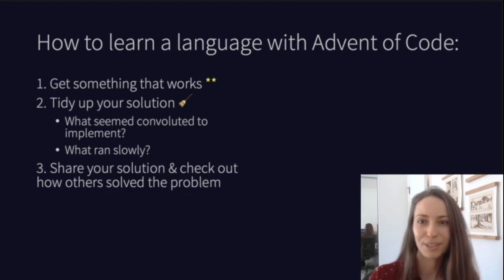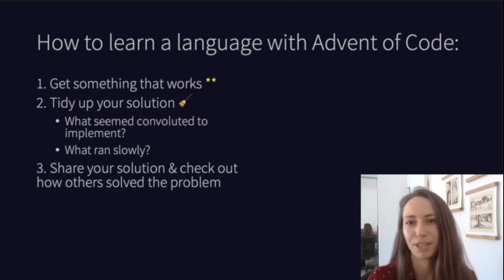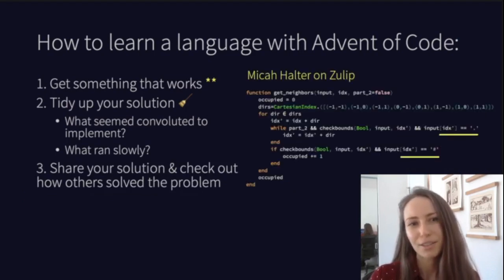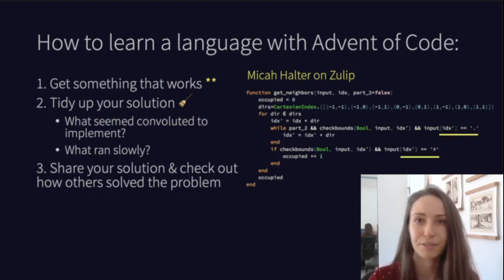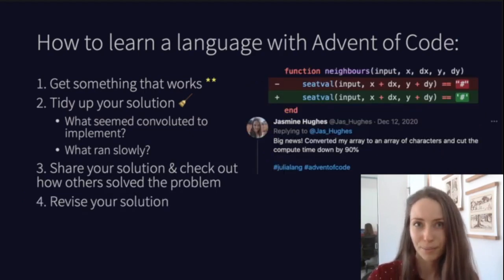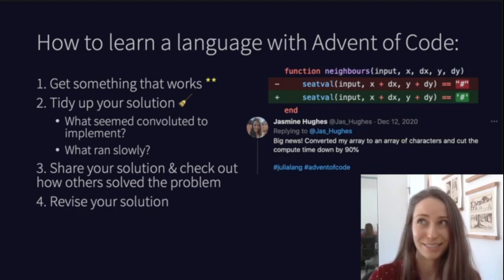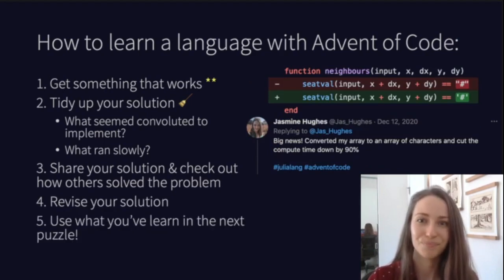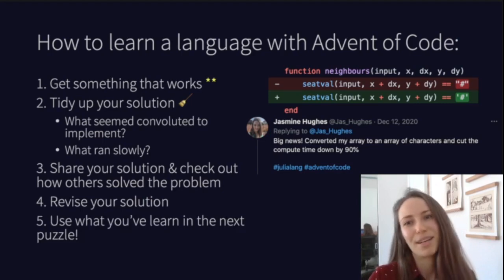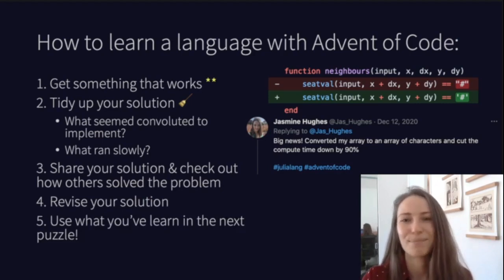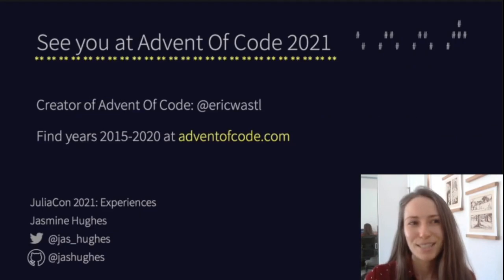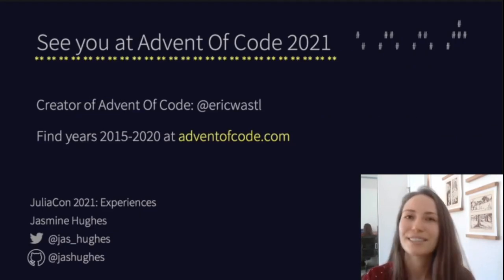Then check in with the community — how did other people handle the same tricky parts? For example, I looked on Zulip and found that a lot of people were using character arrays, whereas I'd used a string array for this problem. I converted my solution to a character array instead and found this cut down 90% of my computation time. Finally, keep in mind what you've learned for the next day or the next set of puzzles. I hope to see you at Advent of Code 2021, whether you're learning a new language, flexing your skills, or trying to convince someone else to learn Julia.